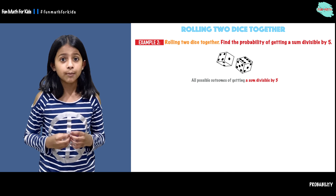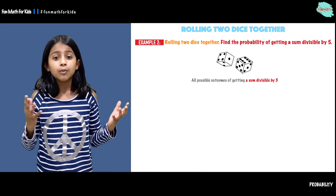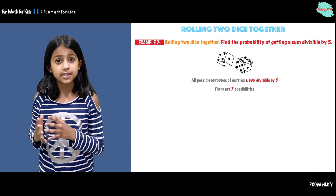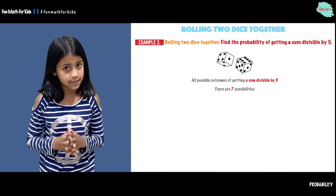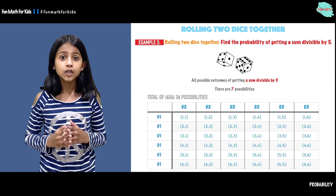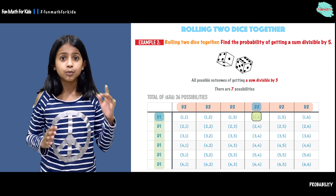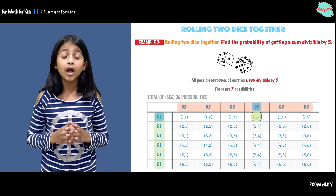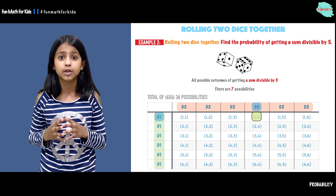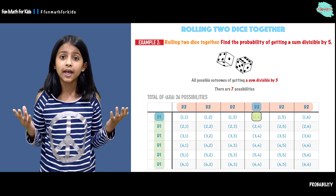Now let's talk about when we roll d1 and d2 together, what are all the possibilities we can get when a sum is divisible by five. There are seven possibilities. When we roll d1 and d2 together, we can get one on d1 and four on d2. Why is one and four one of the possibilities? Because when we add one and four together, we get five.